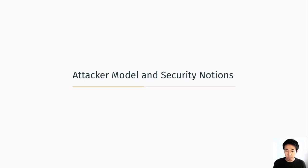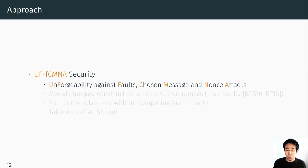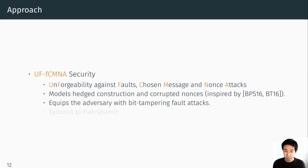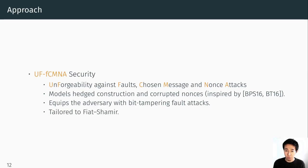Let's look at our attacker model. As a formal security notion we define unforgeability against faults, chosen-message and nonce attacks — UF-FCM security. This security notion first models the hedging construction as well as the corrupted randomness analysis, where the adversary is allowed to corrupt the nonce in the signing operation. On top of that, the adversary is allowed to tamper with internal operations using bit-tampering fault attack functions. Our security notion is especially tailored to Fiat-Shamir type signatures so we can capture the concrete fault attacks against those schemes.